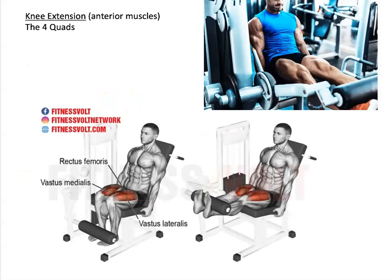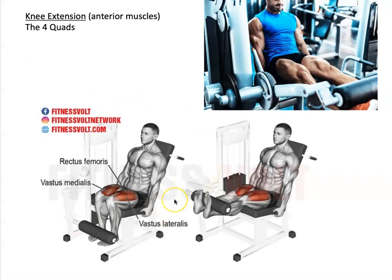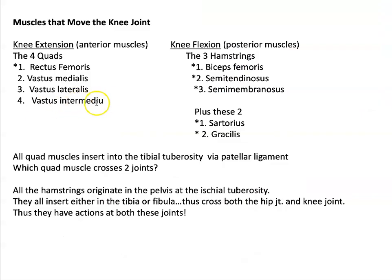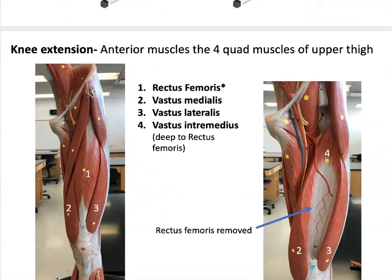Let's start with your four quad muscles. This website shows the action and which muscles are being utilized. These upper anterior thigh muscles are the big quad muscles. Here, his leg is in extension — the quad muscles are extending at the knee. We have rectus femoris in the middle, vastus medialis on the medial side, vastus lateralis on the lateral side, and vastus intermedius, which is deep to rectus femoris.